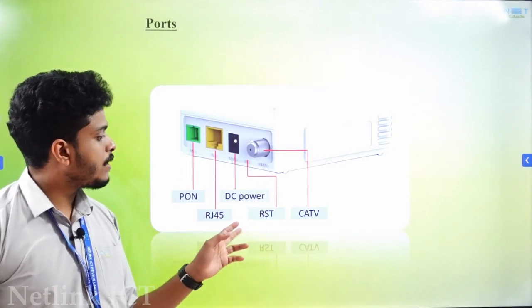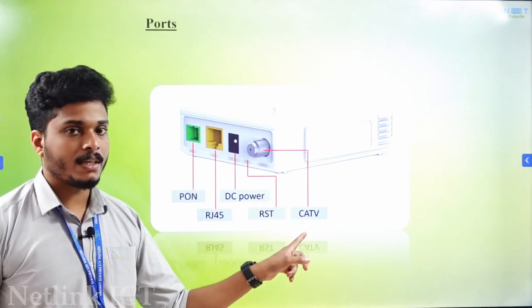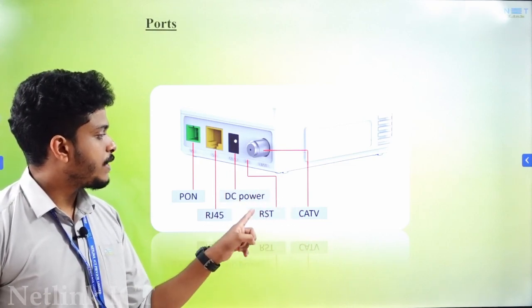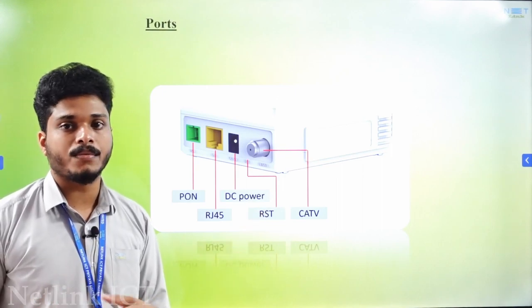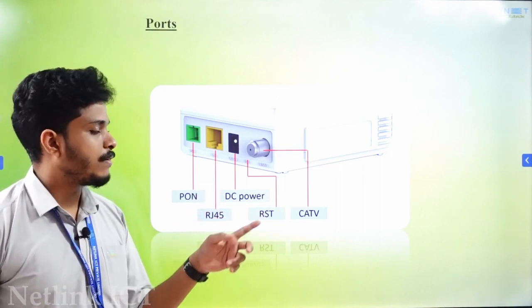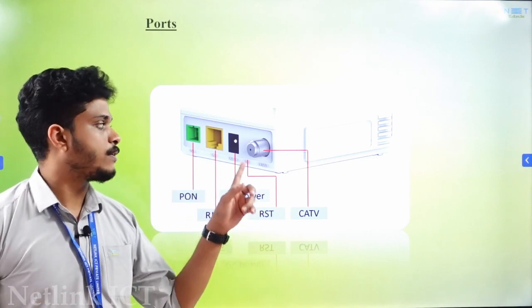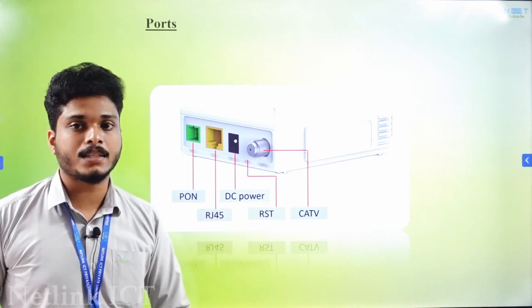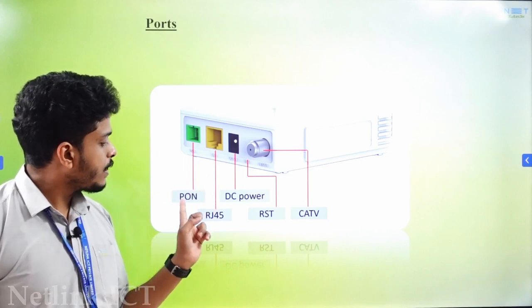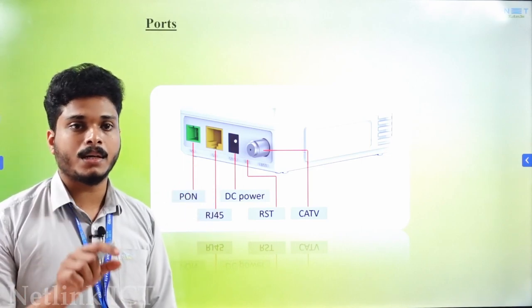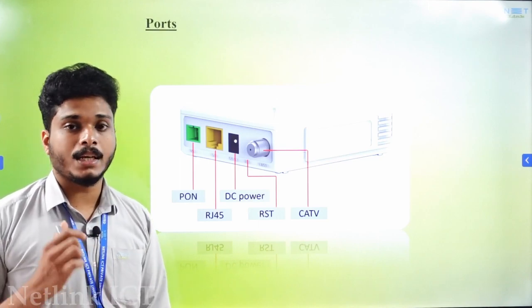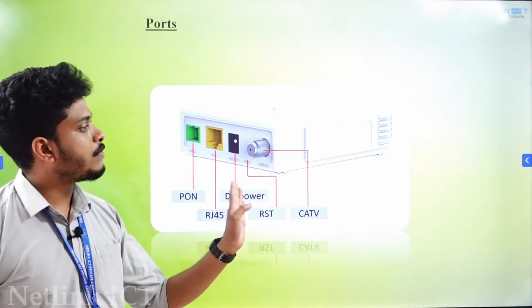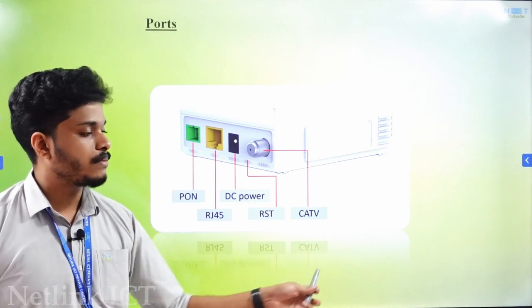In the back panel, there is a CATV port for cable TV and set-top box. Then a reset pin, a DC power input with a power adapter, an RJ45 port for a LAN cable using Cat5 or Cat6 cable. Then a PON port — we can connect the PON to the operator side, the local exchange carrier, and the control room via fiber cable.